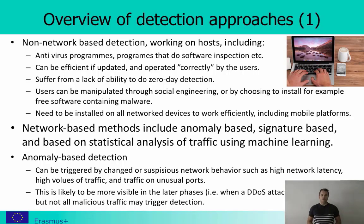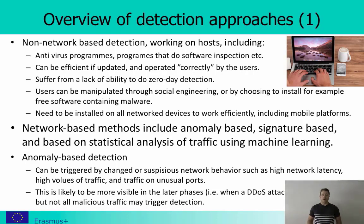Then there are network-based methods, which include anomaly-based, signature-based, and methods based on statistical traffic analysis. Anomaly detection is based on seeing very unusual behavior — for example, high network latency, a large increase in traffic volume, or traffic on unusual ports — and flagging it as suspicious because it's considerably different from normal network traffic.